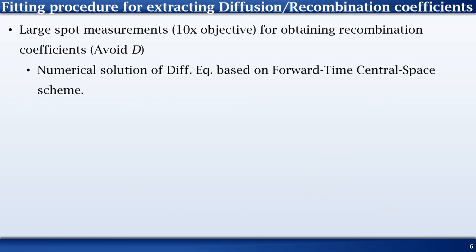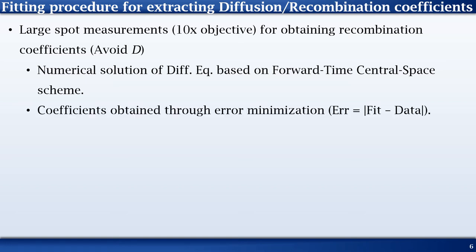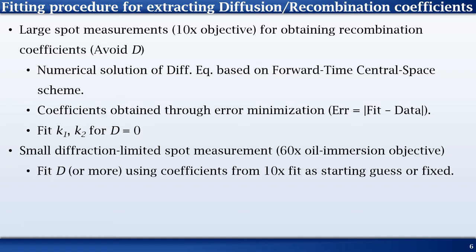We then numerically solve the diffusion equation in a forward time central space scheme. A nonlinear least squares regression is applied to our simulation results and the experimental data to extract the coefficients. We first fit k1 and k2 using a 10x objective. Then, we fit D using results obtained from a higher 60x magnification measurement.